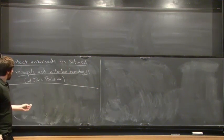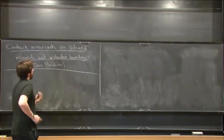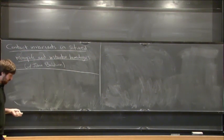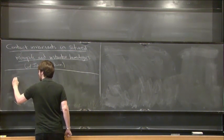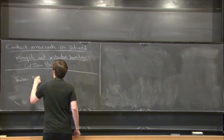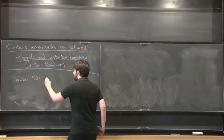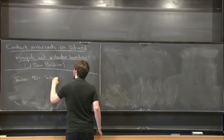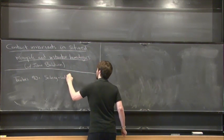I'll give a quick overview of monopoles and contact invariants and related things. This all goes back to work of Taubes in the 90s, in which he proved that the Seiberg-Witten invariants of symplectic manifolds are interesting — in particular, they're non-zero.